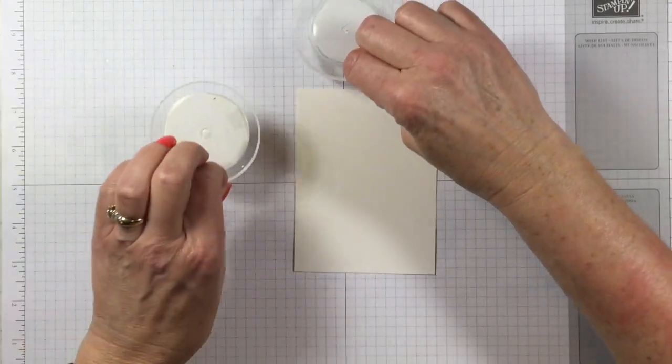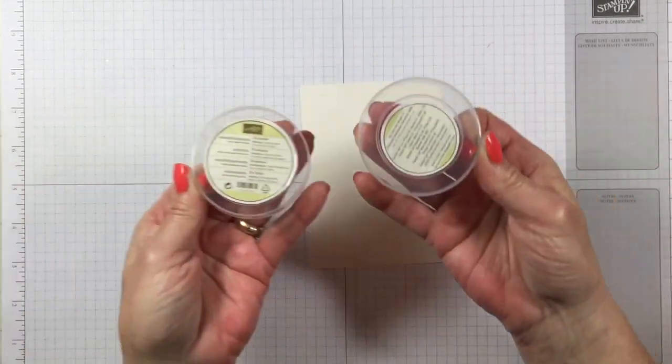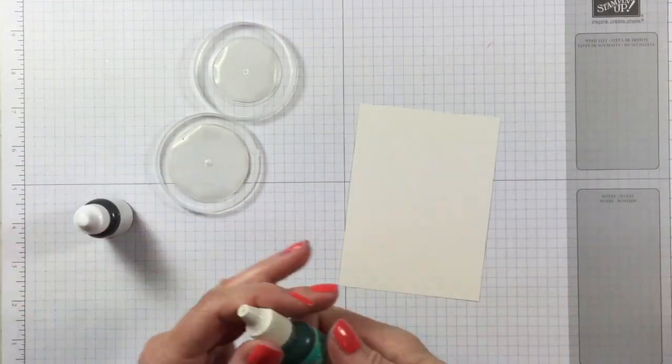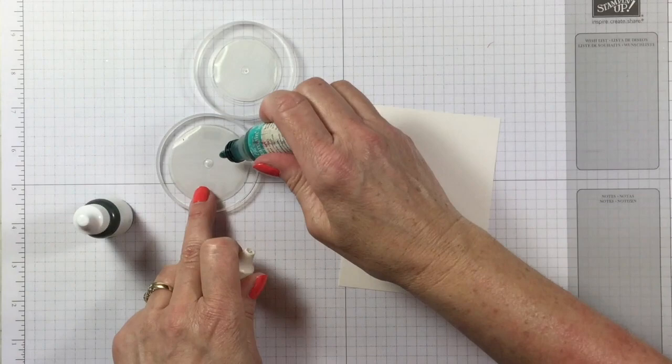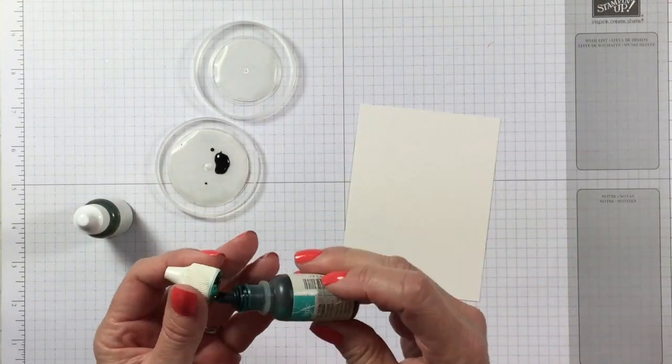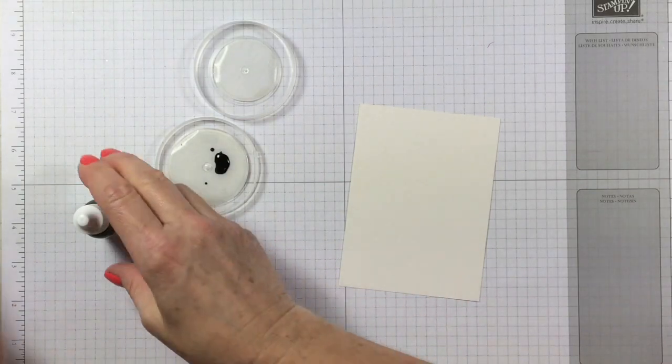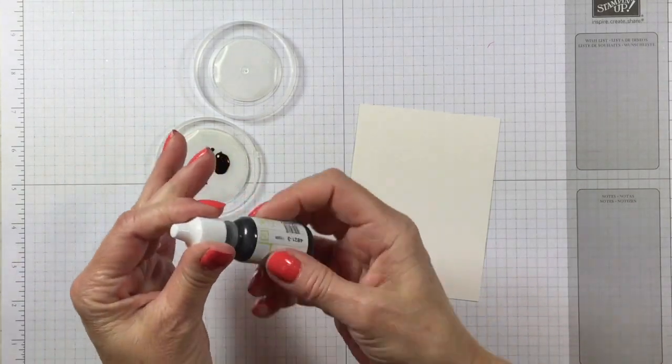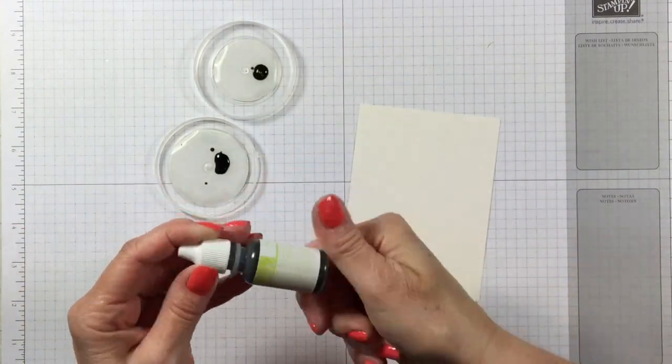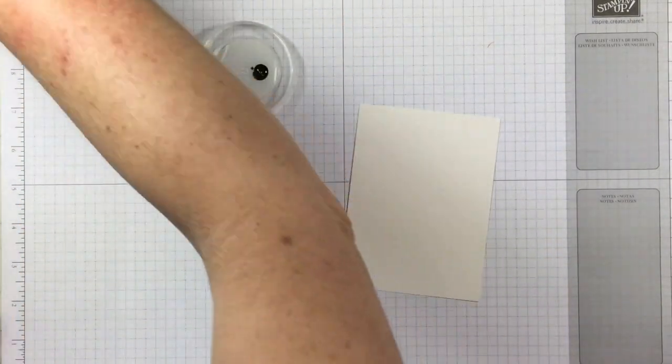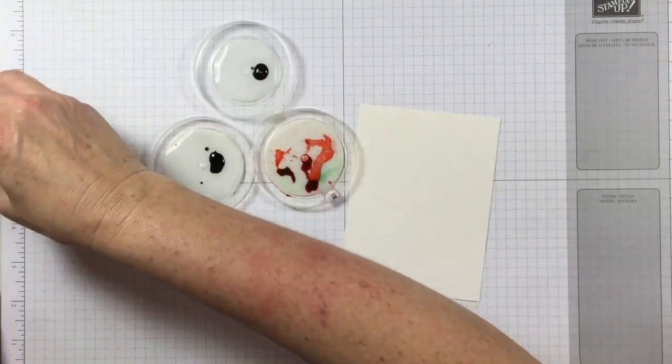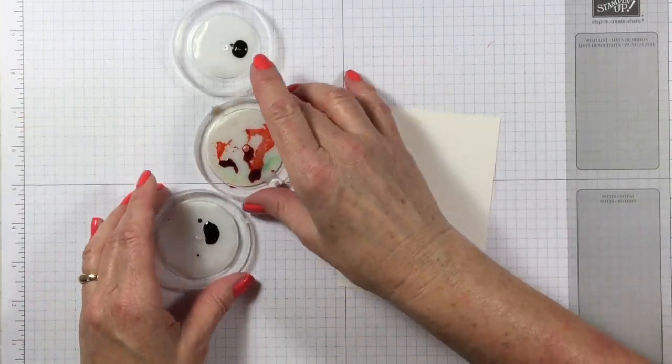So I am going to take a couple lids. These are just lids from some empty embellishment containers. And I'm going to add a couple colors of my reinkers. And I have chosen Bermuda Bay and Lemon Lime Twist. This is a new ink color. And then I've got one started here that was Calypso Coral. So I'm just going to show this to you.